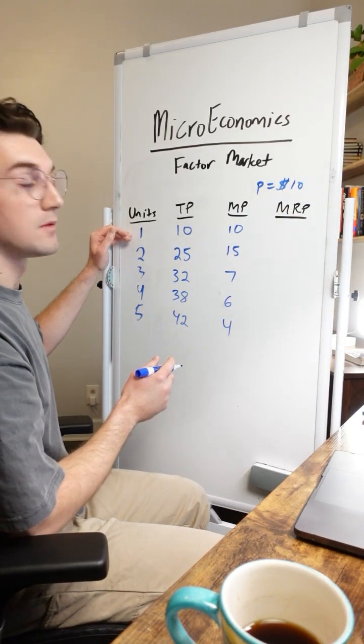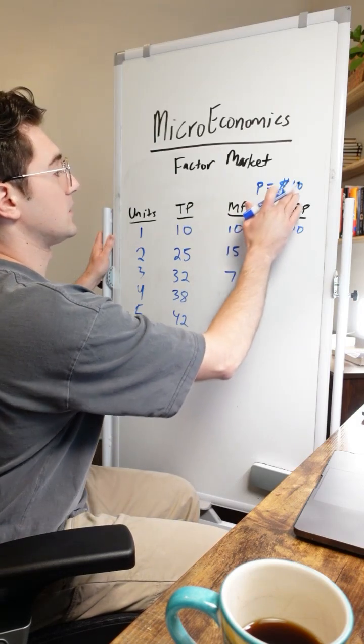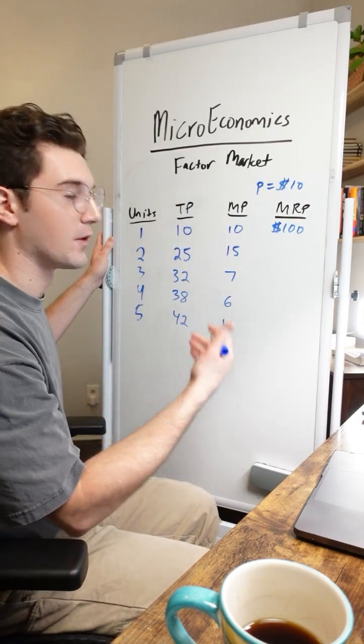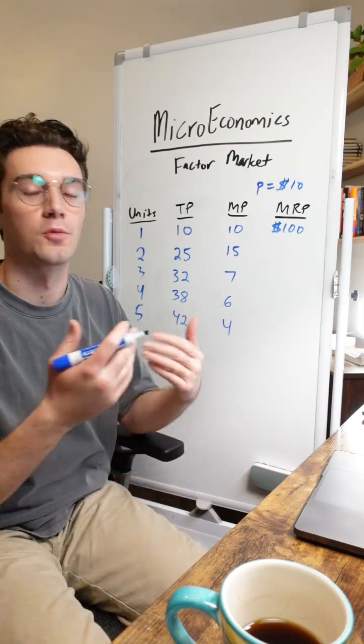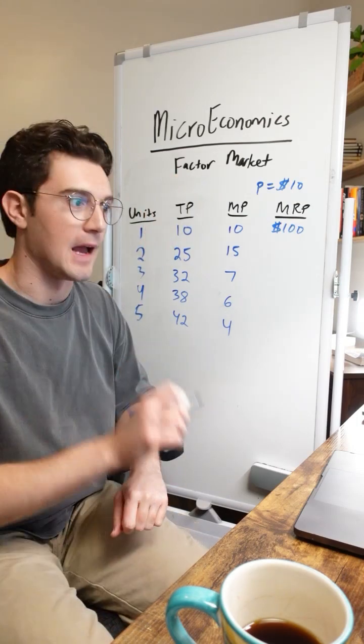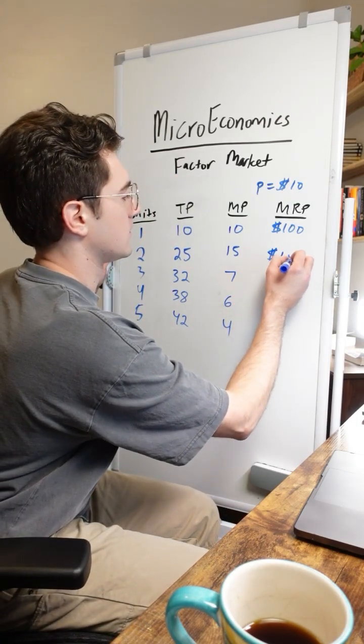So that means that this first machine here generated 100 bucks. 10 units times 10 bucks equals 100 bucks of additional revenue from the product. It just means how much money did that machine, or worker, or acre of land, whatever factor you're working with, add to your total revenue.